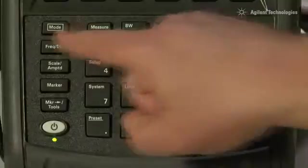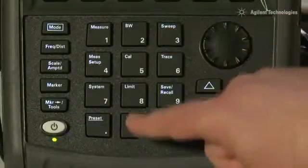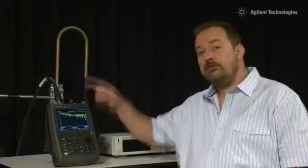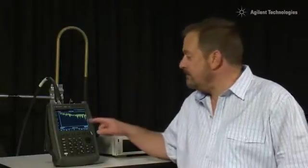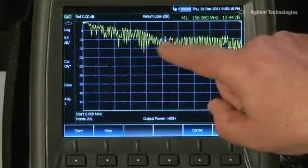This antenna we know is tuned to around 157 MHz in the VHF marine band. Let's press Frequency and set a stop of say 300 MHz. The resonant frequency of the antenna should be somewhere in the middle of the screen. And you can see there is sort of a dip in the return loss there.